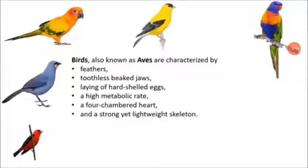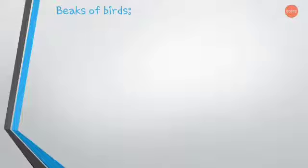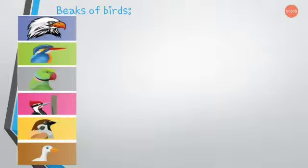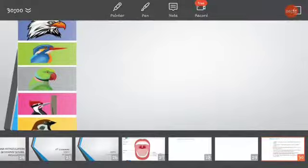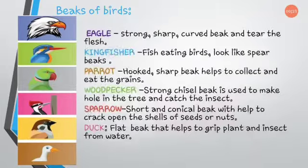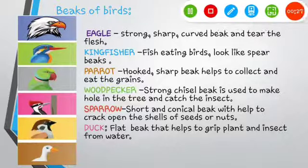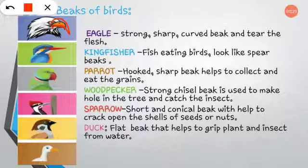Have you ever wondered why birds have beaks of different shapes and sizes? Now we discuss about beaks of birds. Every bird has a different beak. The first bird is the eagle. Eagle has a strong, sharp, curved beak to tear flesh. So only they have the curved beak.